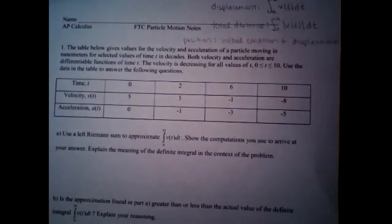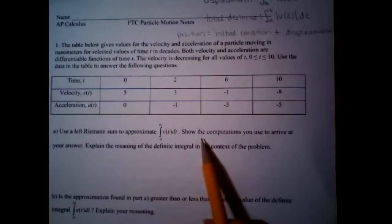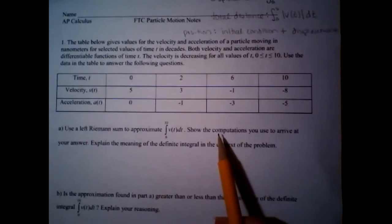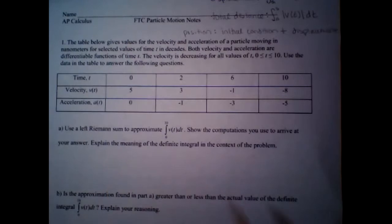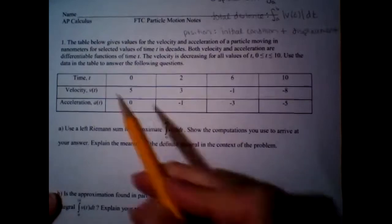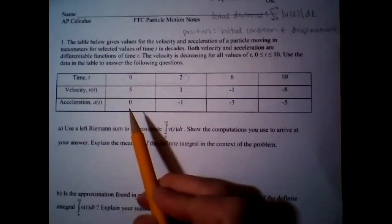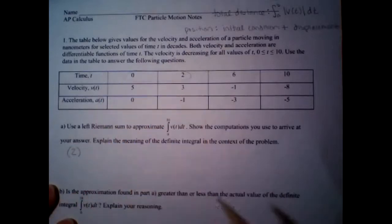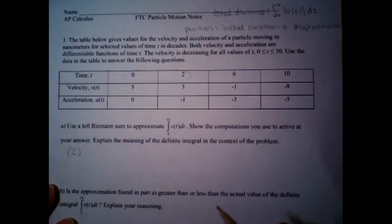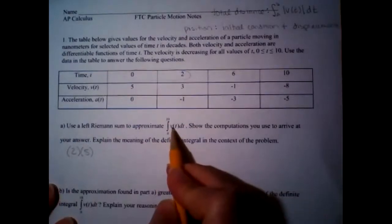Letter A: use a left Riemann sum to approximate the integral from 0 to 10 of velocity. Show the computations — that just means show what you added together; you don't even have to simplify. First subinterval from 0 to 2 is a width of 2 decades. Left Riemann sum means I pick the value on the left, which is 5 — using velocity because that's what's in the integral.